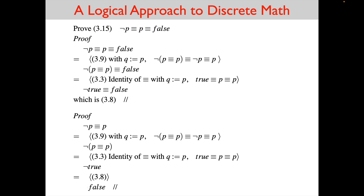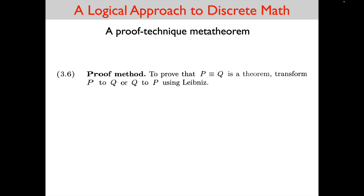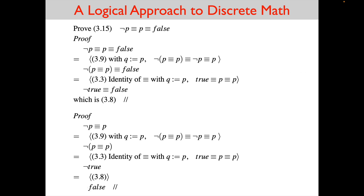When we use this proof technique metatheorem, we cannot quote the last line as a previously proved theorem, because false is not a previously proved theorem. In the first proof we end with 3.8; in the second proof we end with just false. So in this example, our capital P in the metatheorem is 'not P equals P', and our capital Q is false. We showed that capital P is equivalent to capital Q — that not P equals P is the same thing as false.